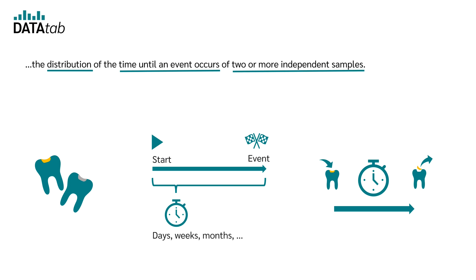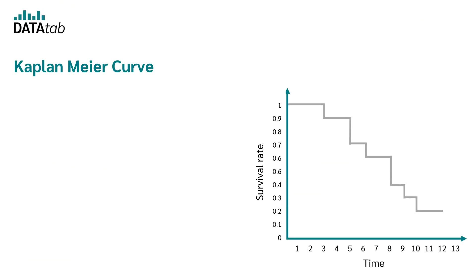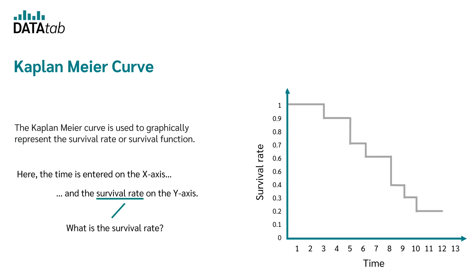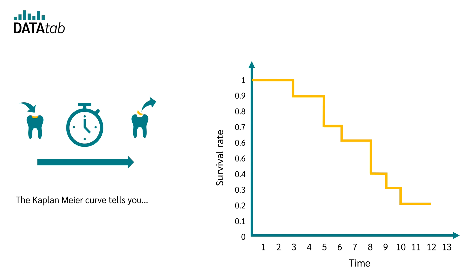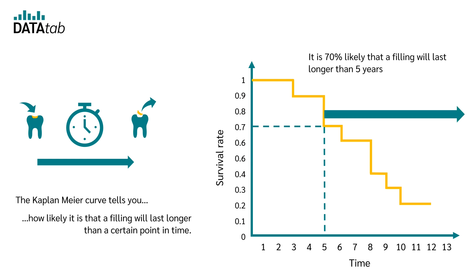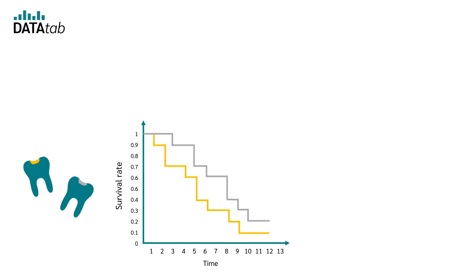How do we compare the times until the filling breaks out again? We do this with the help of the Kaplan-Meier curve or with the table used to create this graph. The time is entered on the x-axis and the survival rate on the y-axis. The Kaplan-Meier curve tells you how likely it is that a filling will last longer than a certain time. For example, you can read from the curve that it is 70% likely that a filling will last longer than 5 years. Now we want to check whether there is a difference between two materials, so we enter both curves in the chart.